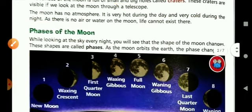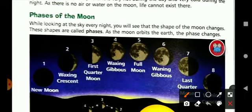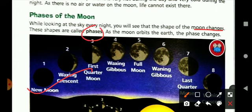Now let's read about the phases of the moon as you can see in the picture. While looking at the sky every night, you might have seen that the shape of the moon changes and these shapes are called phases. As the moon orbits the earth, the phases change.